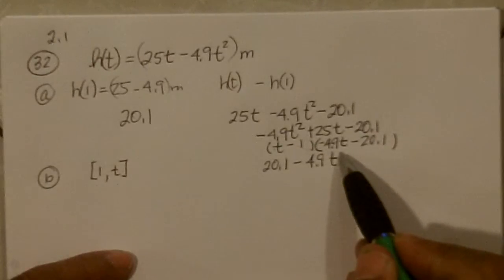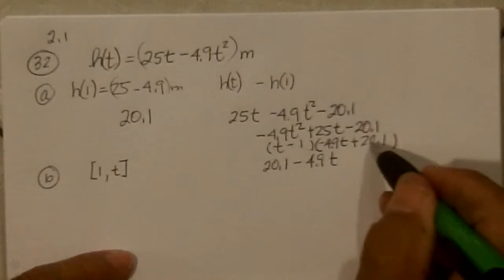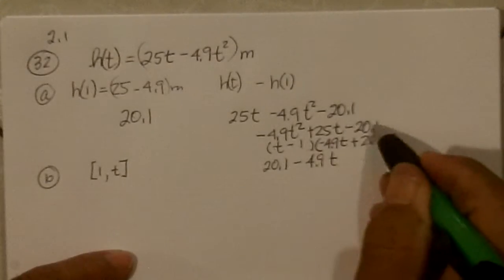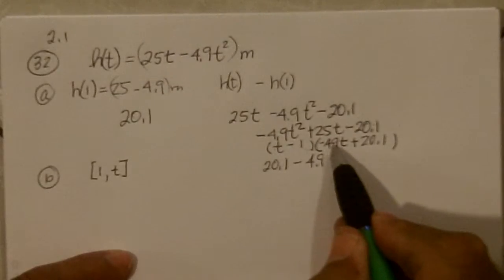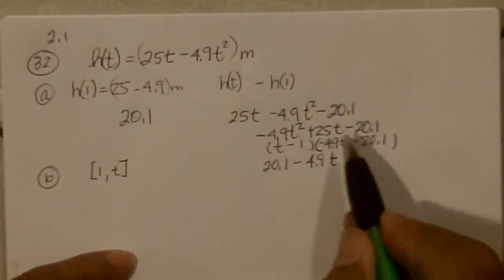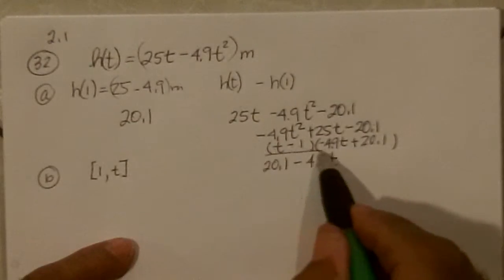Here, let's see, did I get that right? Oh, negative 1 times a plus 20.1 would make a negative 20.1. So we'd get plus 4.9t, and we'd get plus 20.1t, which is 25t. So it does factor.